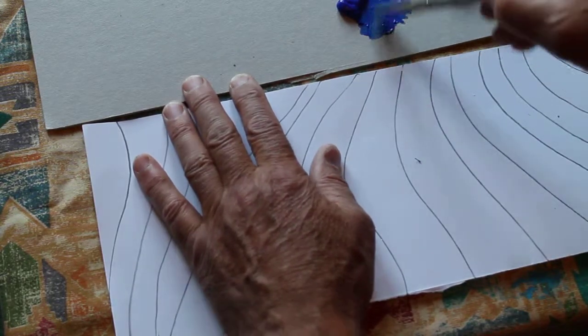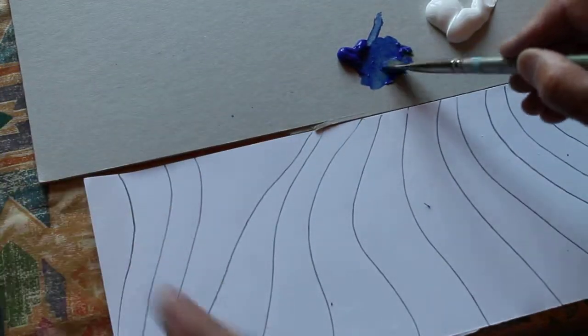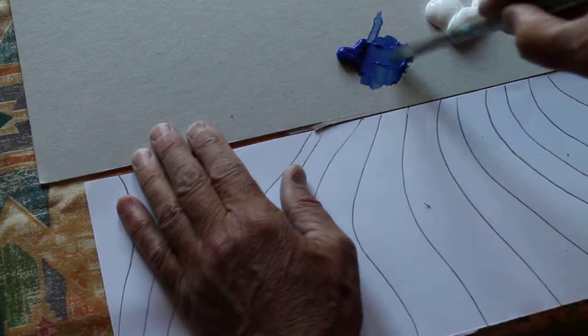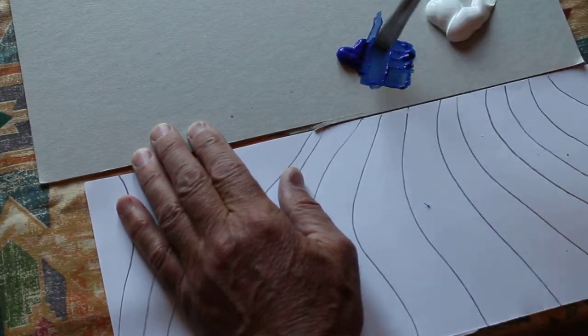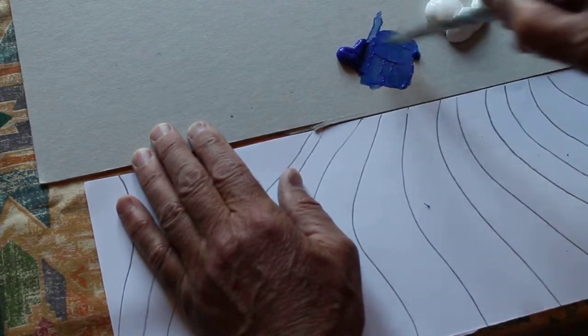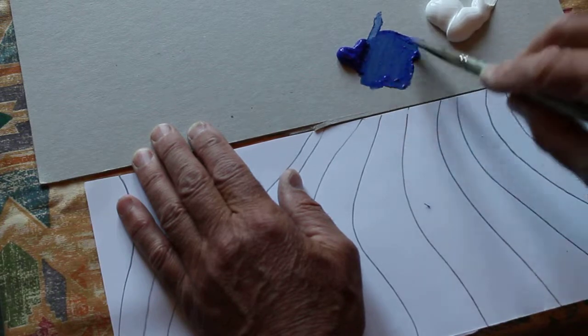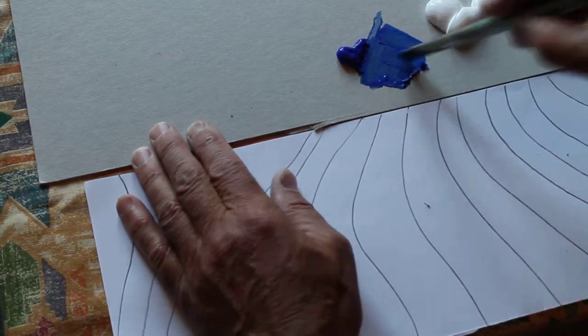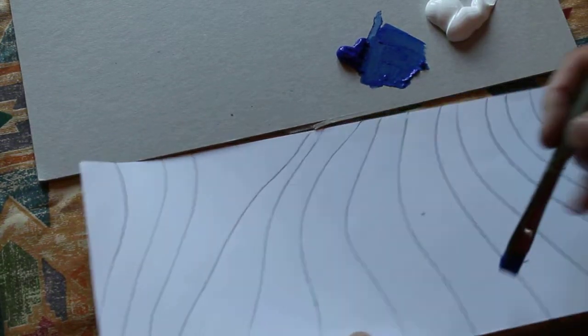You might want to notice how I'm actually mixing the paints—just literally pulling some from the main bit. I'm just using a piece of card. It doesn't necessarily have to be a very popular colour; it can be quite simple. I'm going to work on one of the shapes.